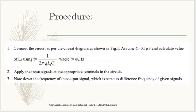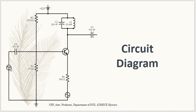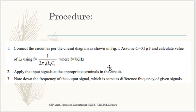After finding the value of the inductor, apply the input signals at the appropriate terminals in the circuit. That is, M1(t) and M2(t) are applied at their respective terminals. We then note the frequency of the output signal, which should match the difference frequency of the given input signals.